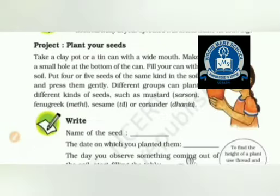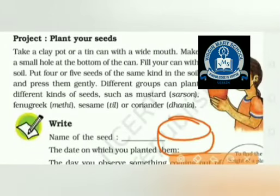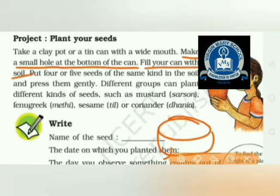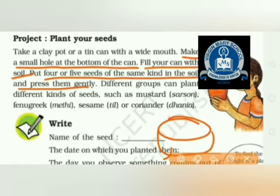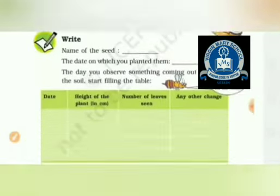Now we will cover the project activity. Take a clay pot or a tin can with a wide mouth. Make a small hole at the bottom. Fill your can with soil. Put 4 or 5 seeds of the same kind in the soil and press them gently. Different groups can plant different kinds of seeds.